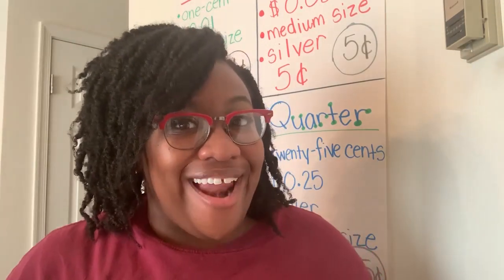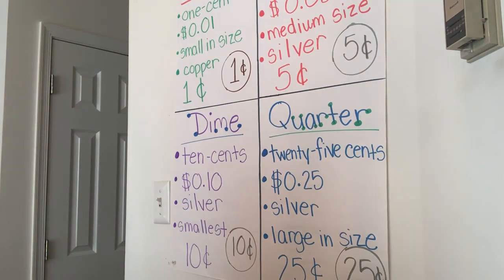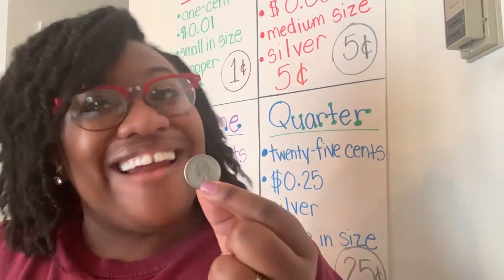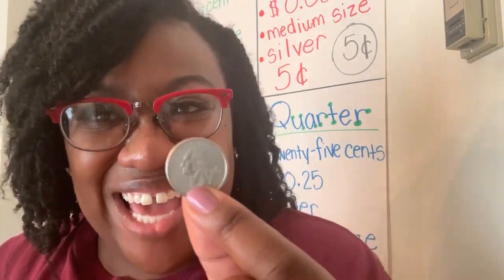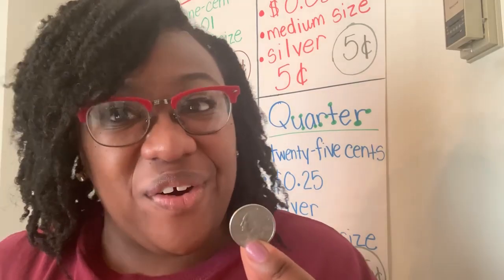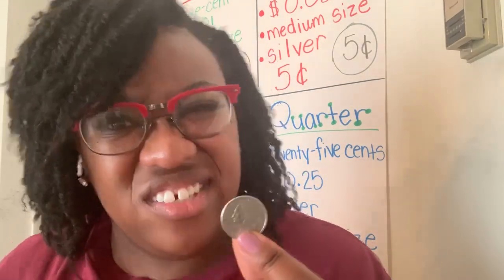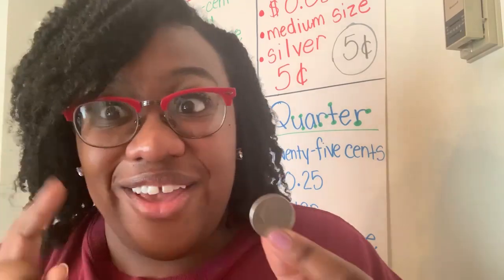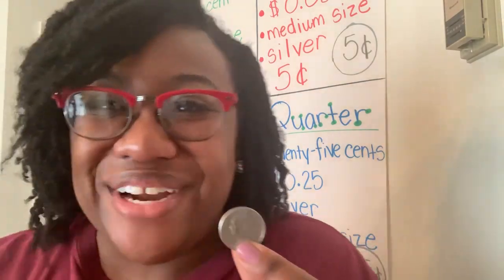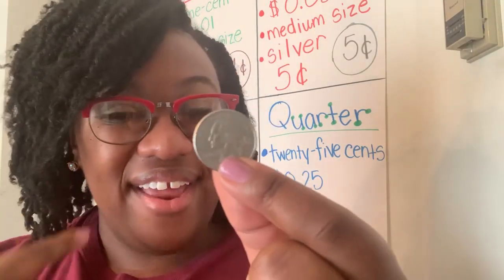All righty guys, I think you're ready for our last coin. Our last coin is the quarter. Our quarter is one of our bigger coins — it is silver and it has our first U.S. president on it. Do you know who that is? President George Washington is on our quarter, on our heads.